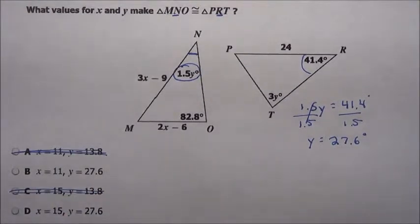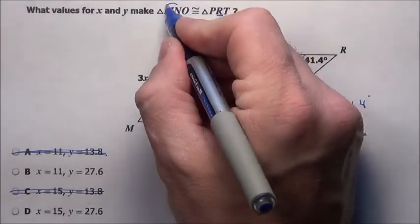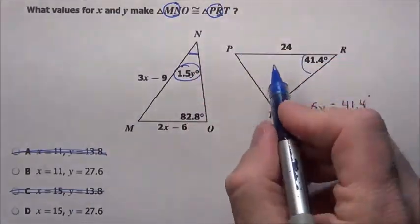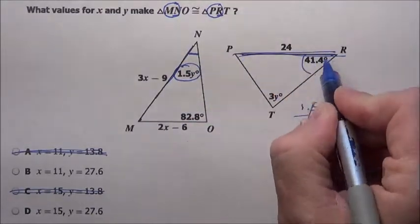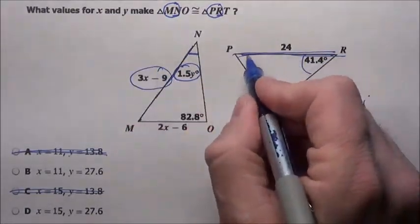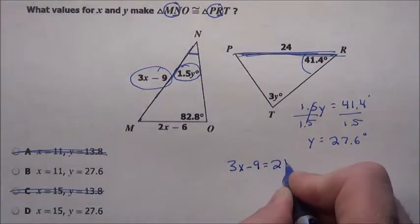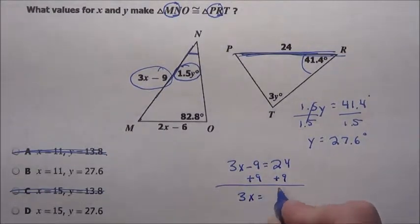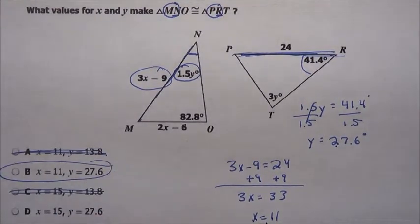Now I just got to figure out x. Well, how do I figure out x? It gives me a couple things here. It gives me this MN. Notice MN — that side length has to match up with PR. There's PR. So I know this side length has to be the same as that. So I know 3x minus 9 has to equal 24. Just solve this. Add 9, add 9. 3x is 33. I get x is 11. 11 for x, 27.6 for y.